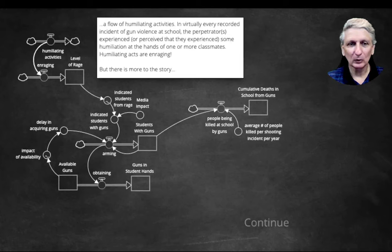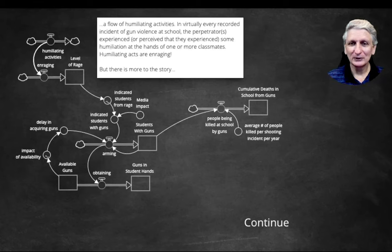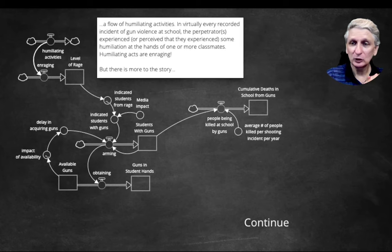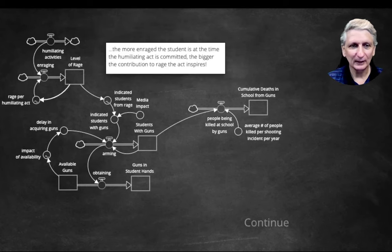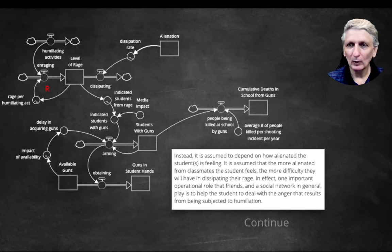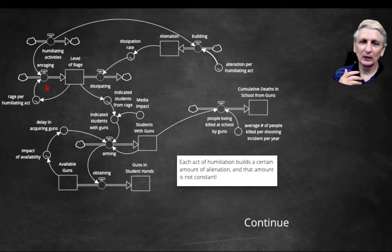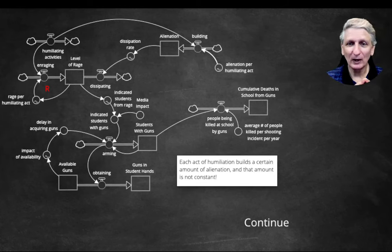It builds up a more complex model, in particular looking at the humiliation of some students or the reasons why they may resort to such actions. Systems modelling is designed to help broaden our understanding of what's occurring — so it's not just looking at the availability of guns but also about why students might use guns in a school setting and how all of these different factors can interrelate. This model tries to argue for building in a mechanism to try to dissipate students' rage levels so they don't get to a point where they resort to the use of violence in schools, particularly through the use of guns.